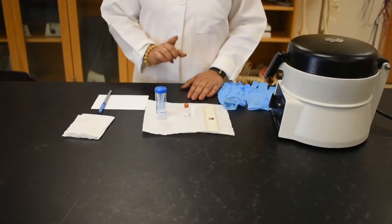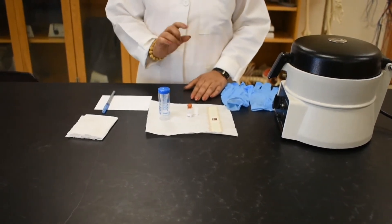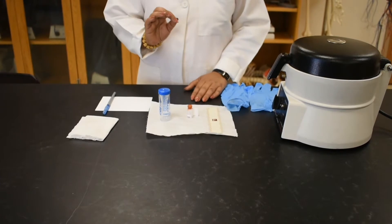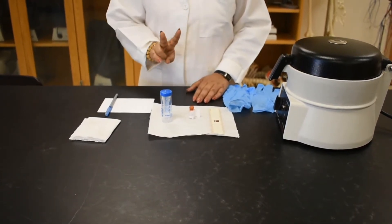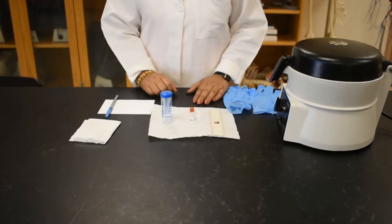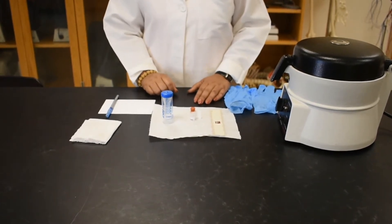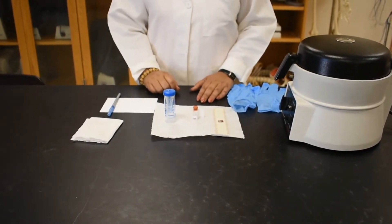Today I am going to show you how to prepare and read hematocrit value. As you know, our blood is formed by two components, blood cells and blood plasma. Hematocrit is the percent value of red blood cells in a whole blood sample.